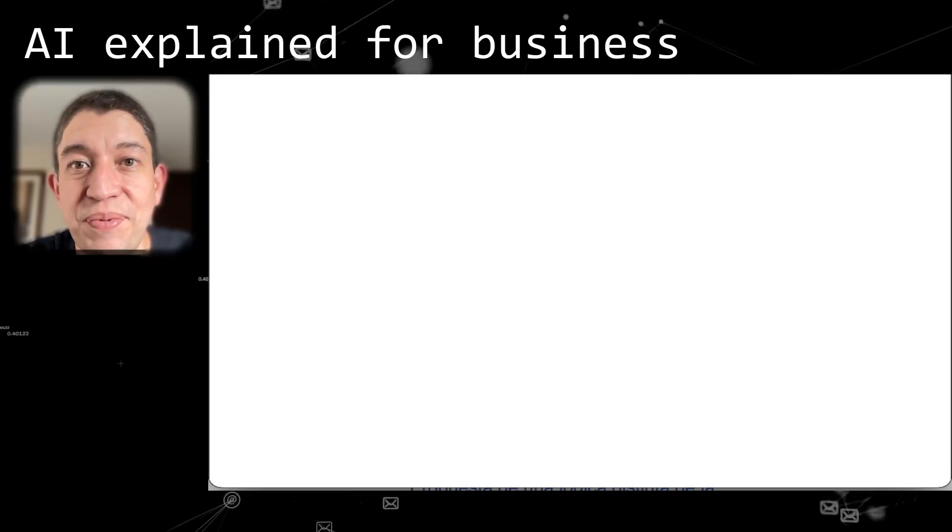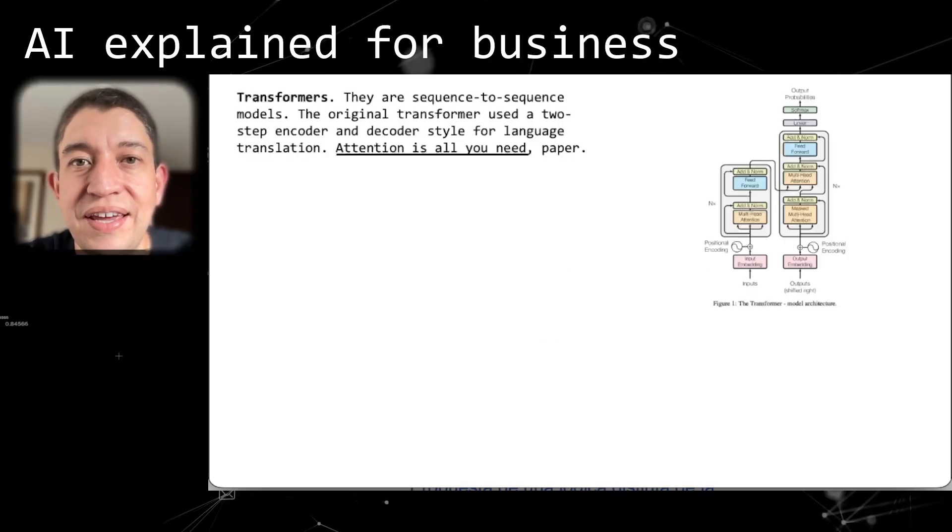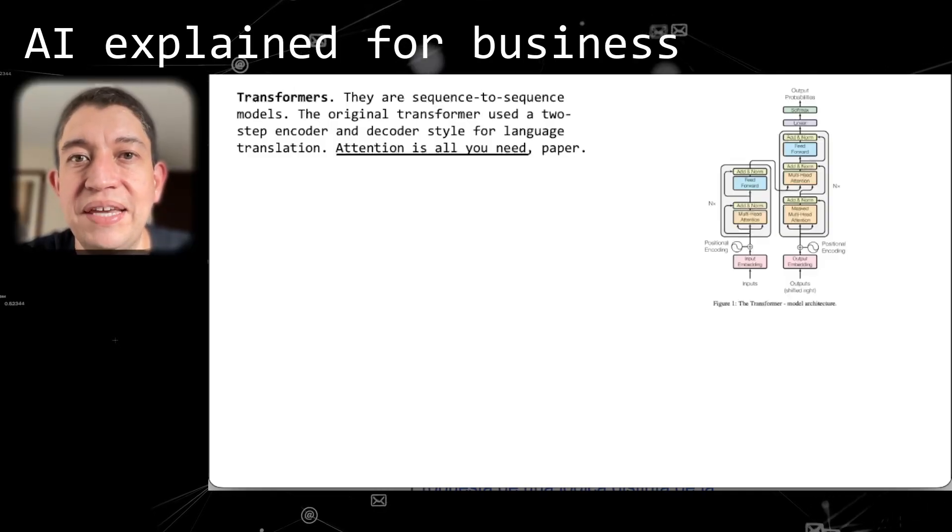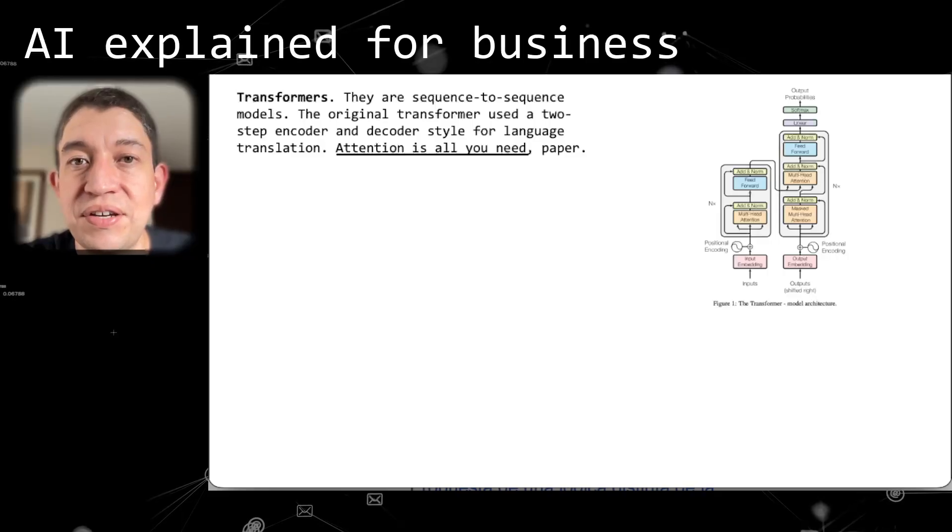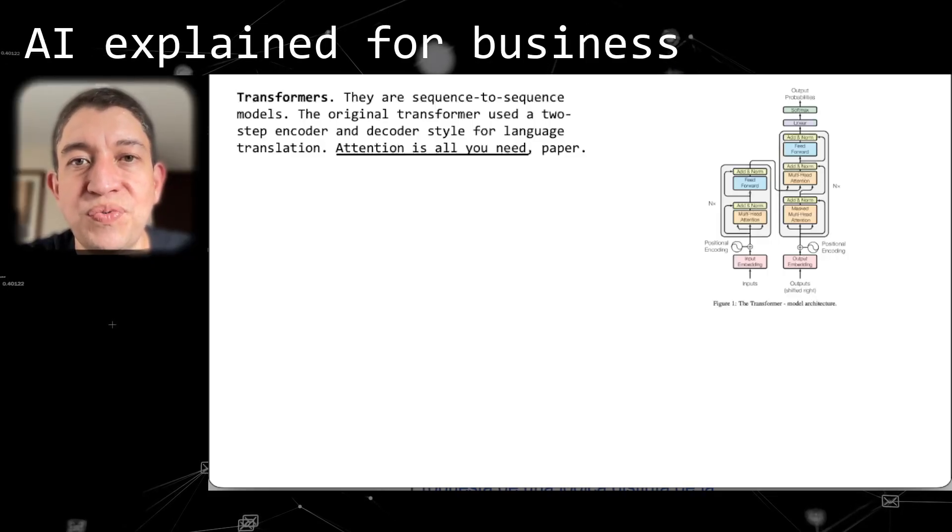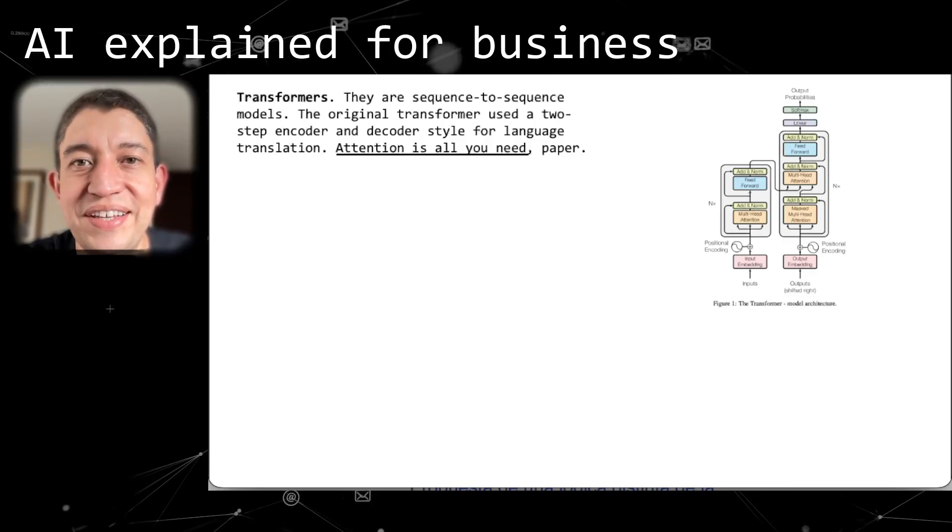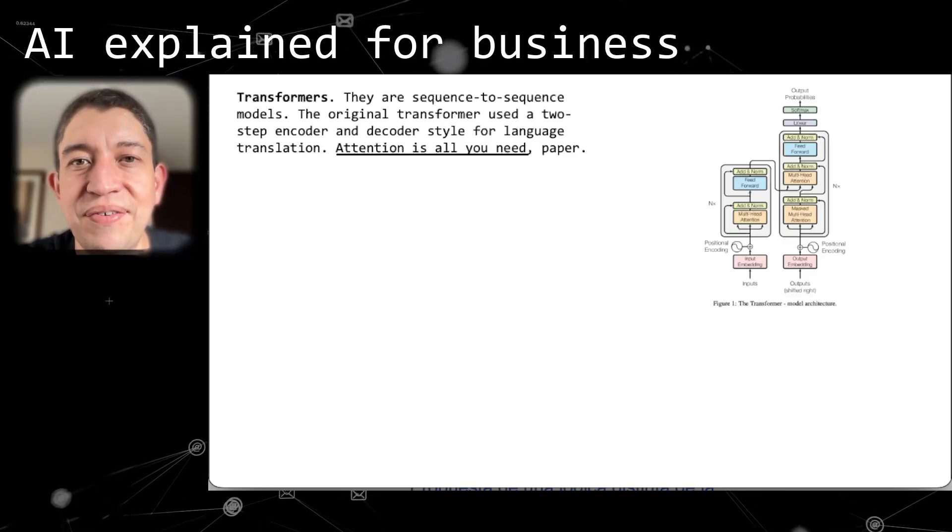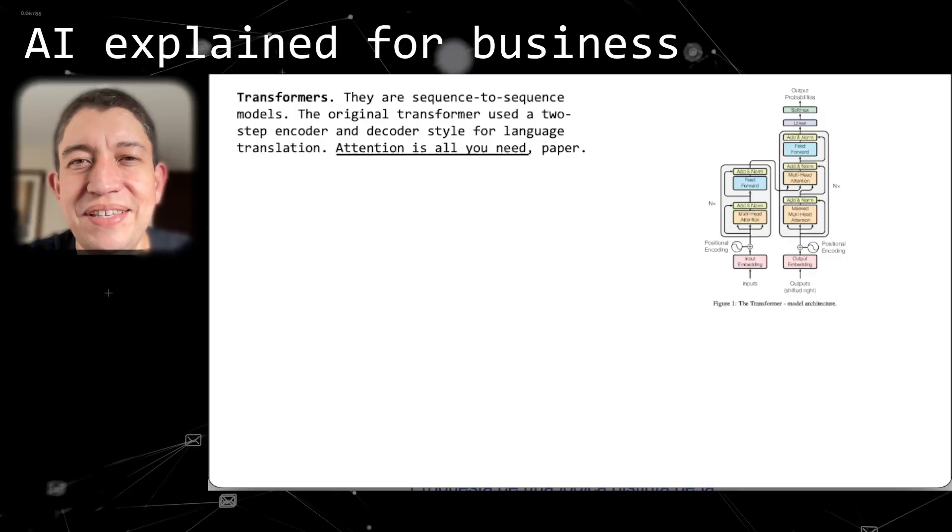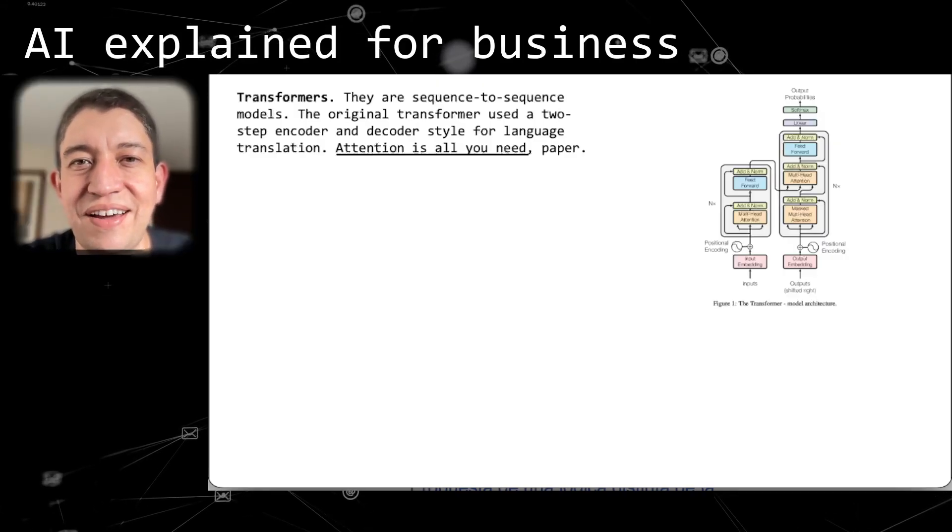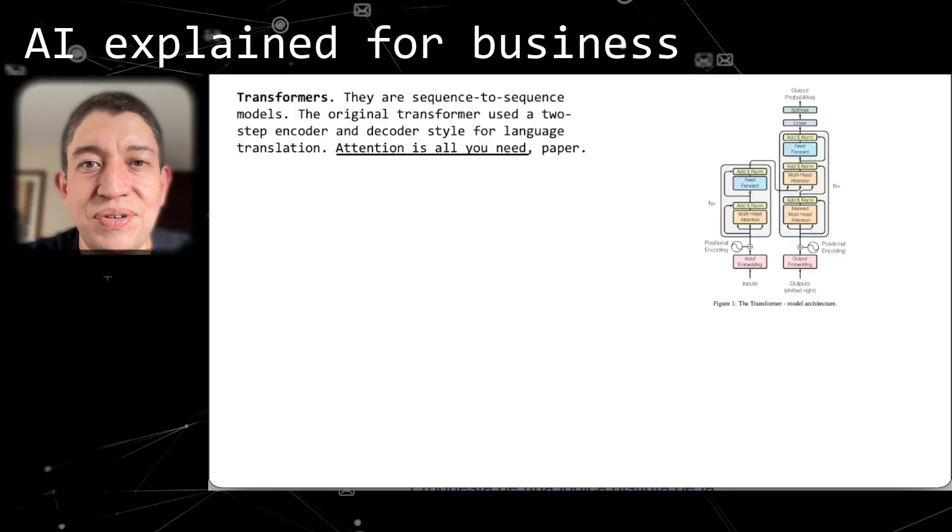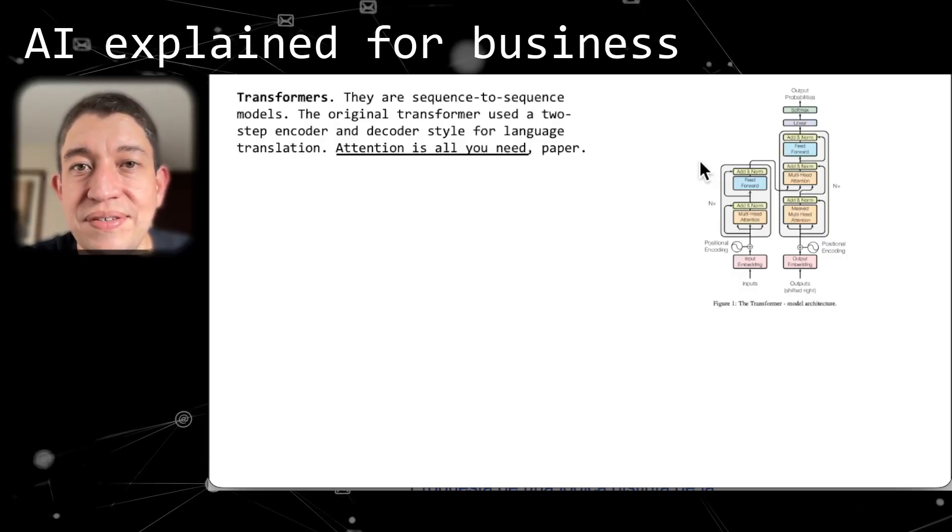It all began with the transformer. You may have heard that this is a critical concept in the generative space. This is an architectural pattern that was initially used for language translation. As you see on the right there, that is the overall diagram of its architecture. It may seem intimidating, but it is not. To put it in layman's terms, it has two pieces of the puzzle.